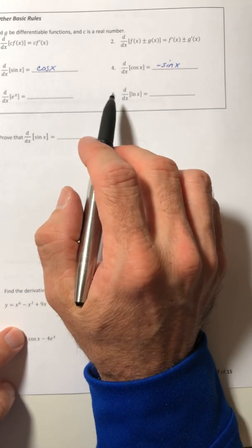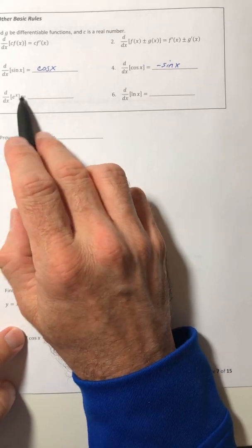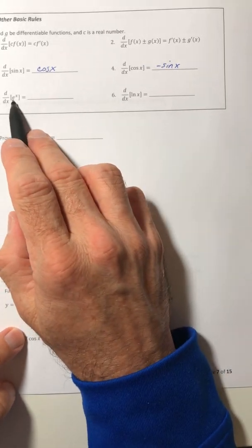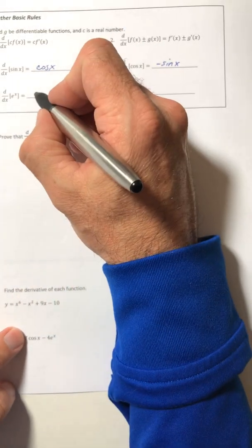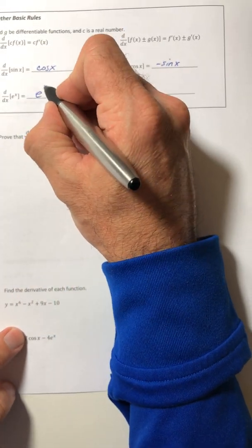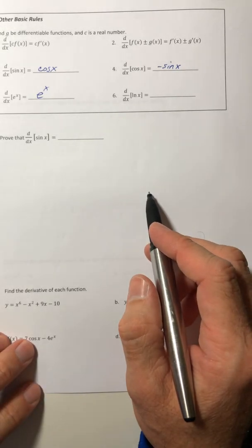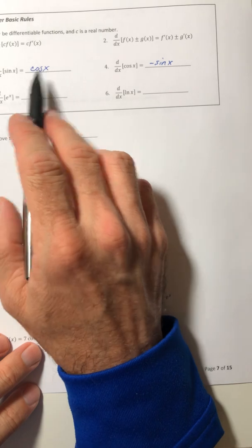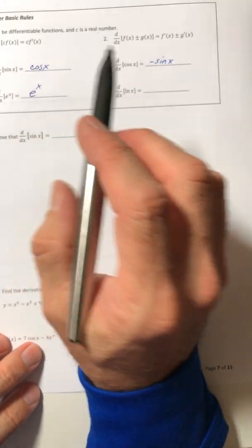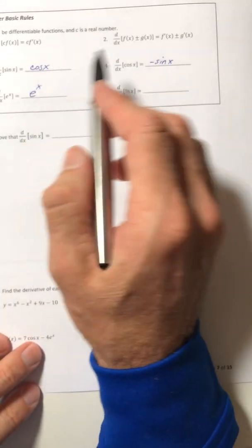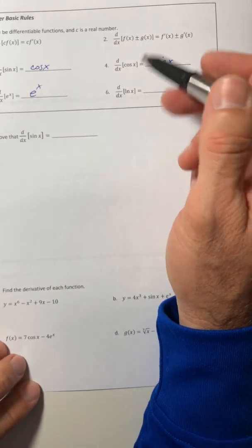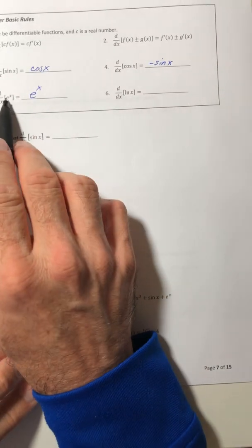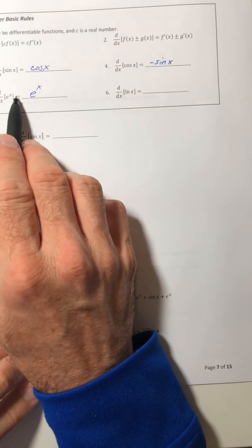Okay, number five, this one's usually a favorite. The derivative of e to the x is e to the x. It is itself, which is weird because remember these derivatives give you the slopes of the tangent line. They give you how fast the function changes.